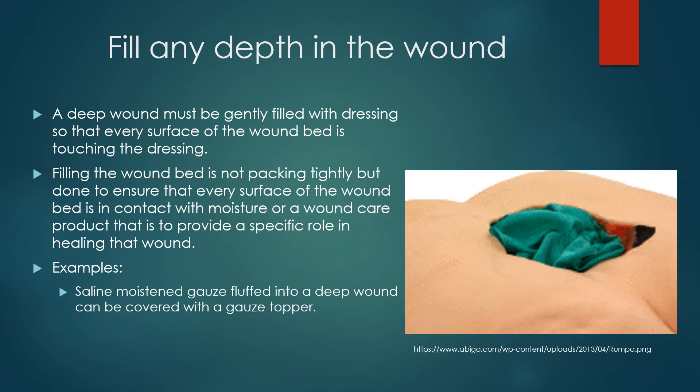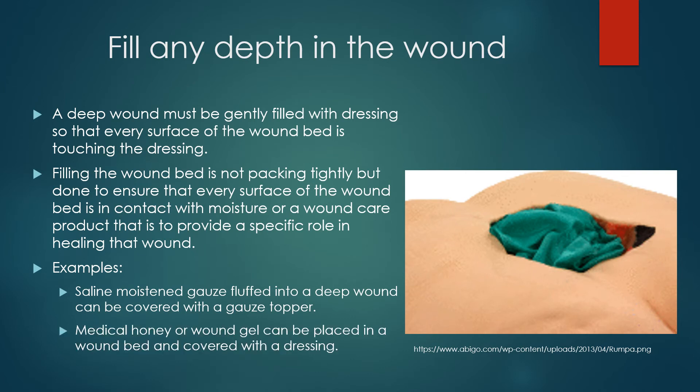Here is an example. Saline moistened gauze fluffed into a deep wound can be covered with a gauze topper. Medical honey or a wound gel can be placed in a wound bed and then covered with a dressing. In this picture, we have a green gauze called Sorbact. It's bunched up and moistened — with body fluids as well — and that will touch every surface and add anti-infective protection.